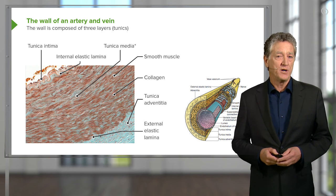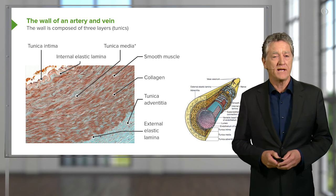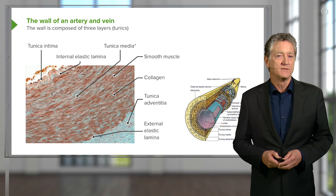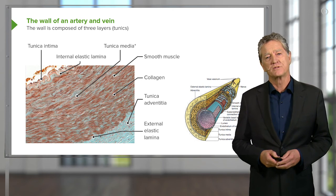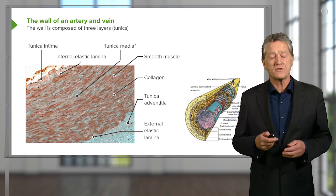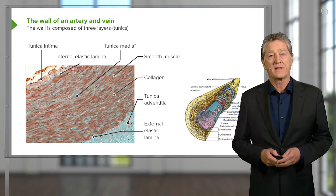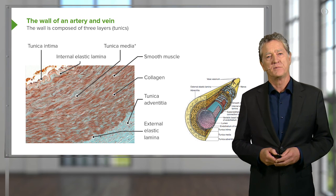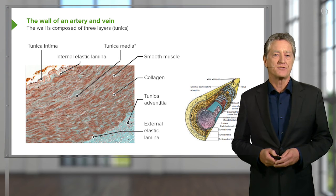And as we look at other lectures later on in this histology course, you'll realize that lots of other cells too make collagen fibres and elastic fibres. But here, importantly, it's the smooth muscle that has that job.